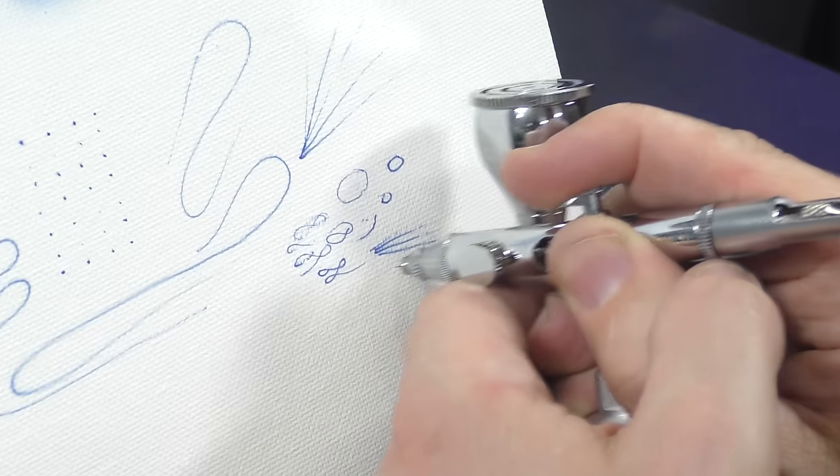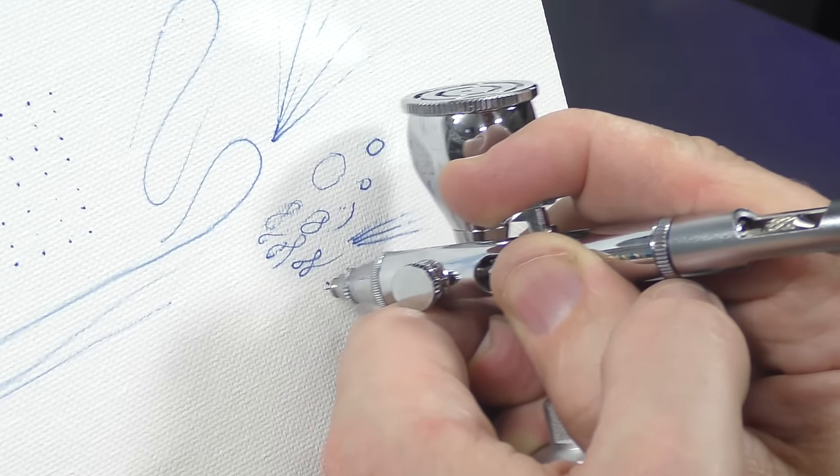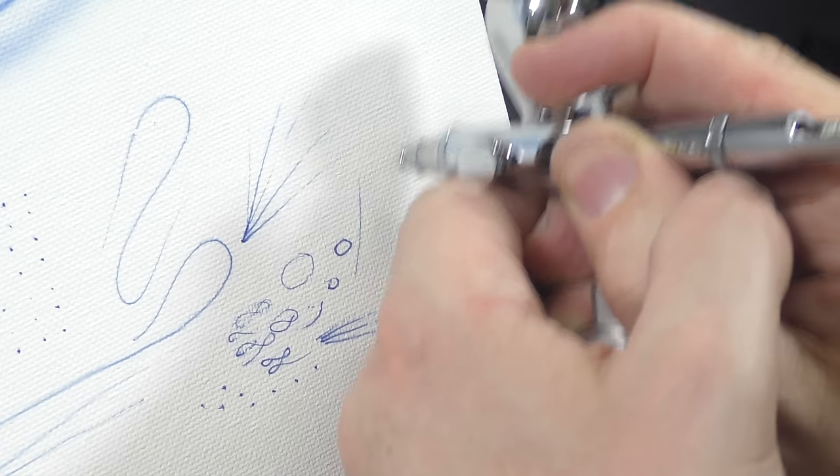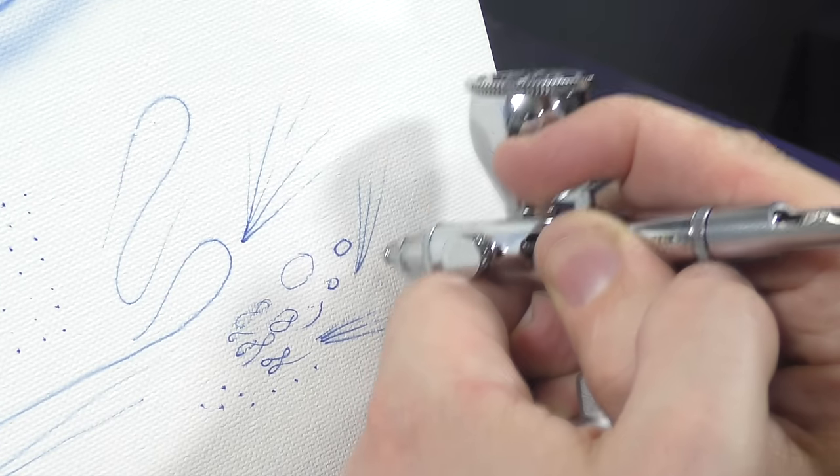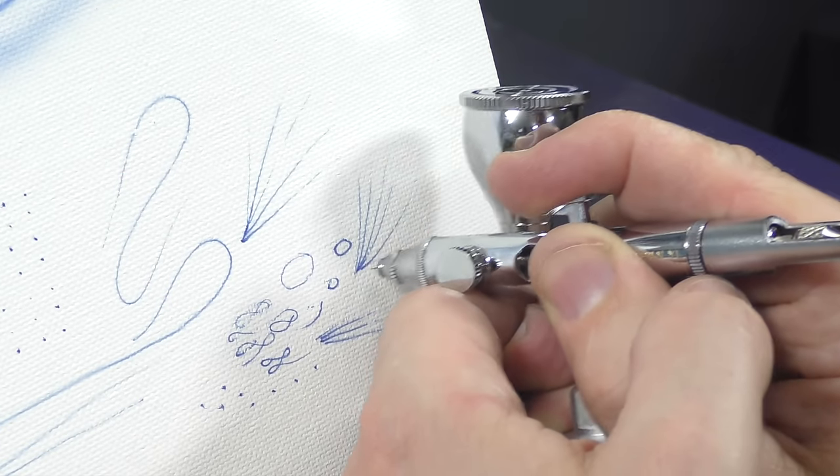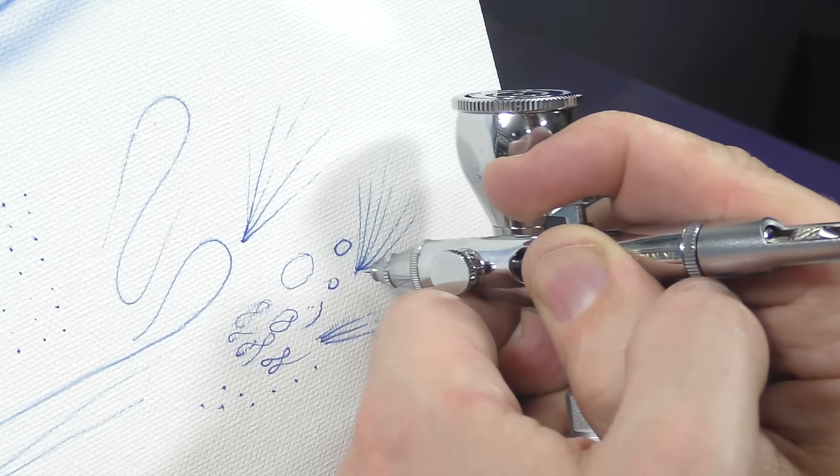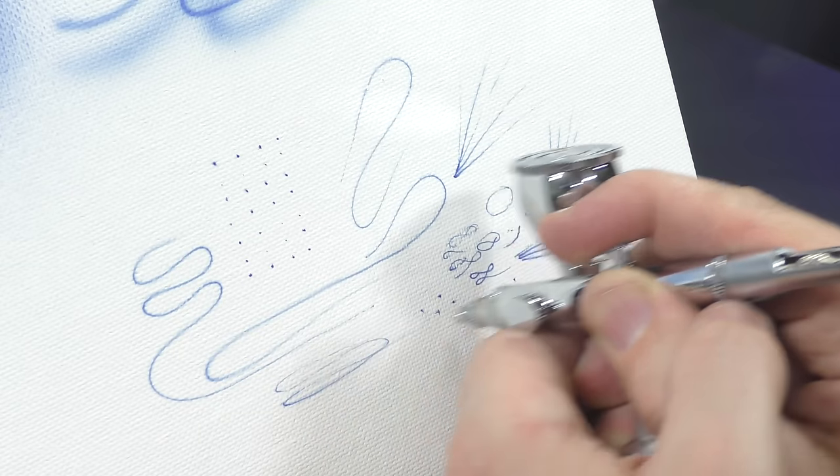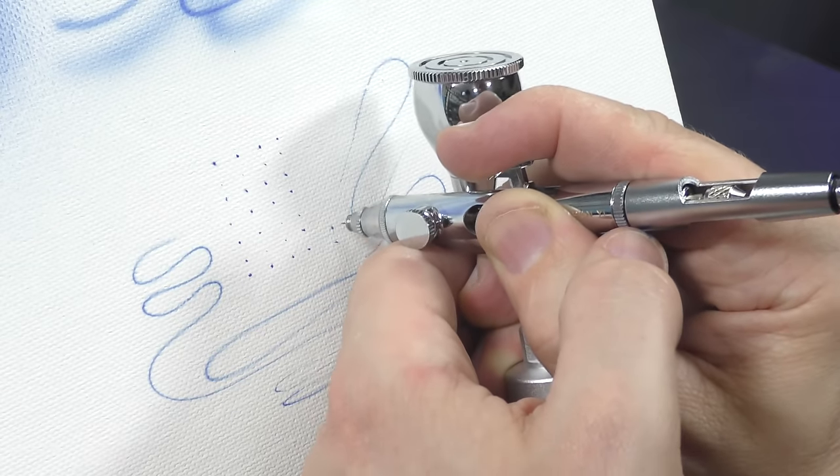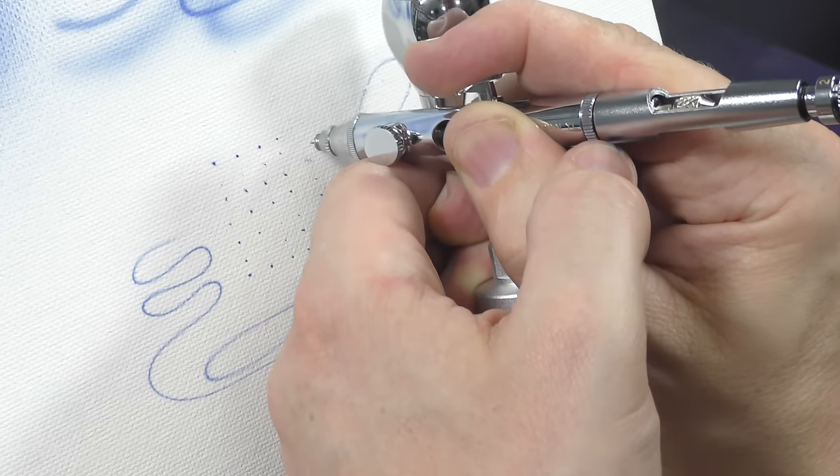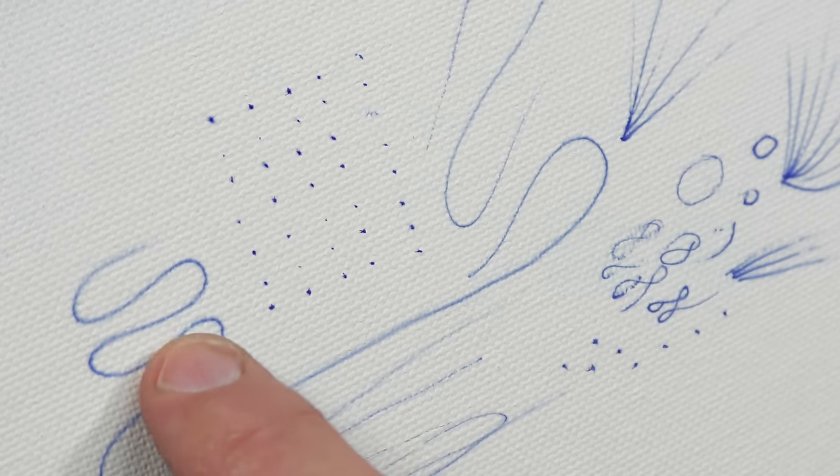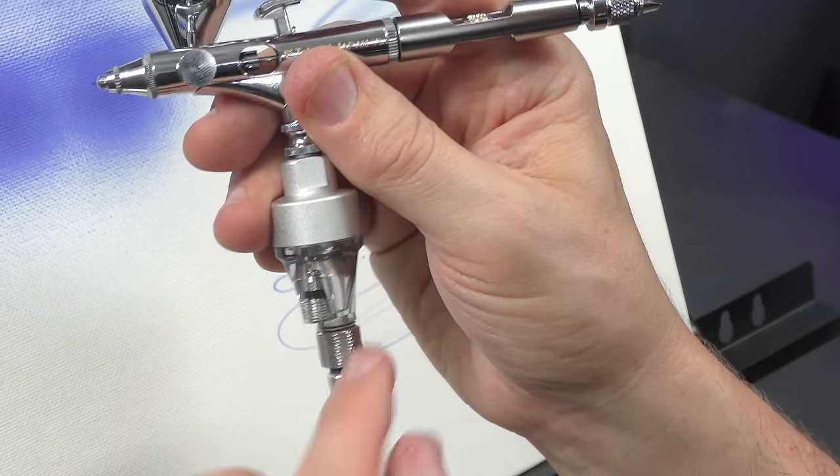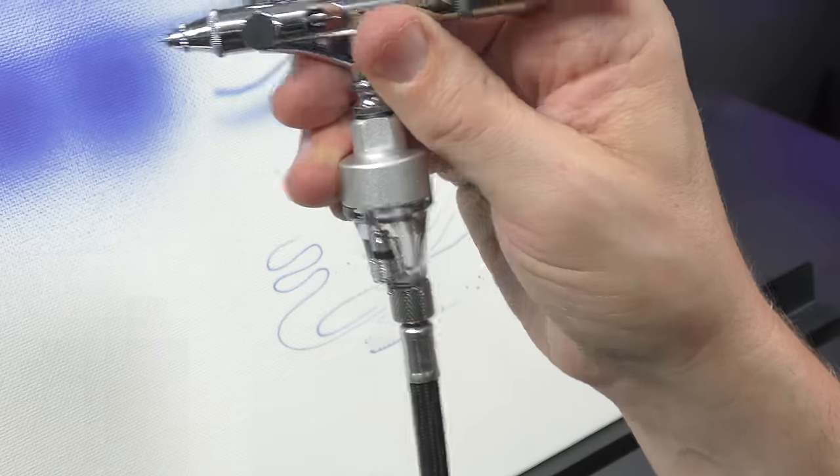My Micron that I've had for about 20 years performs even better now than it did when I first got it. And with these brushes as well, it's all about getting your paint mix right and your air pressure. You can see some nice fine dots and lines. To drain this, you just press down and that's going to drain any moisture that's built up in there.